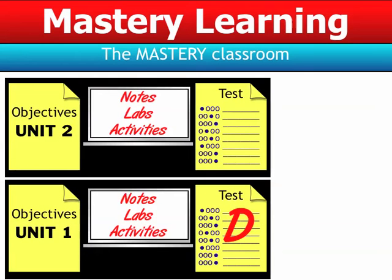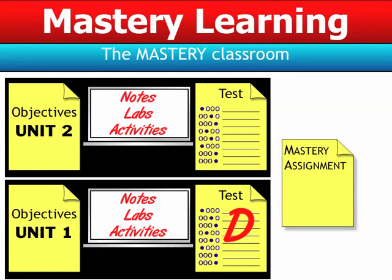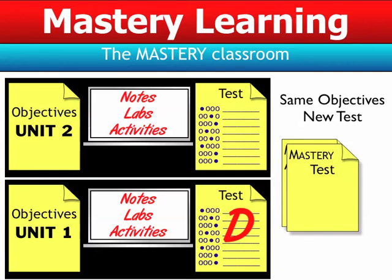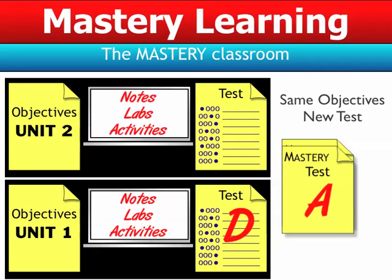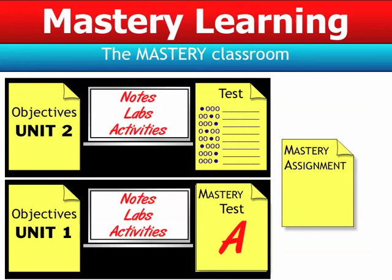Now, the second unit begins — Unit 2, objectives — and during this time it's notes, labs, activities, and tests. All the stuff on the left is inside of class. But outside the class, the student has a choice: they can actually do a Mastery assignment. The Mastery assignment is a set of questions they must complete — questions that relate to difficulties I've seen in the past relating to the test. Turning in the Mastery assignment on time gives them the right to take a Mastery test. The Mastery test is a second test on the same set of objectives, but with a different set of questions — it might even be a different format. On this Mastery test, let's say they do a good job and get an A. Since it's on the same set of objectives, just different questions, they're demonstrating in a different way that they know the material. So what I'll do is replace their D with an A.